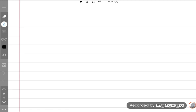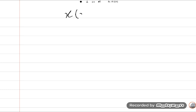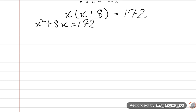So area: width multiply by length or length multiply by width is your choice. x(x+8) = 172. So we should multiply x with the internal bracket, so x² + 8x = 172. So this is a quadratic equation, right?